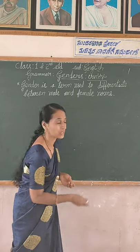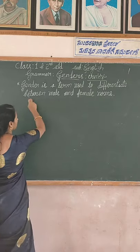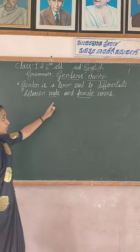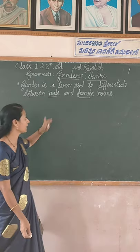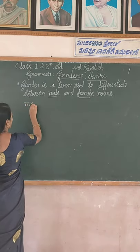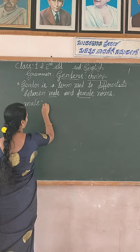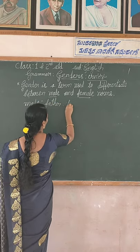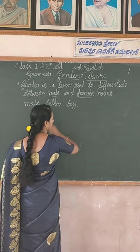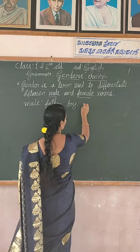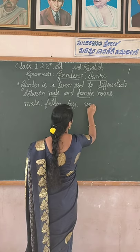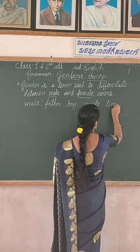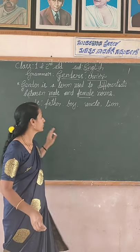For example, students: male and female. Gender is a term used to differentiate between male and female. Male — M-A-L-E — means father, F-A-T-H-E-R; boy, B-O-Y; uncle, U-N-C-L-E; lion, L-I-O-N. This is the male.